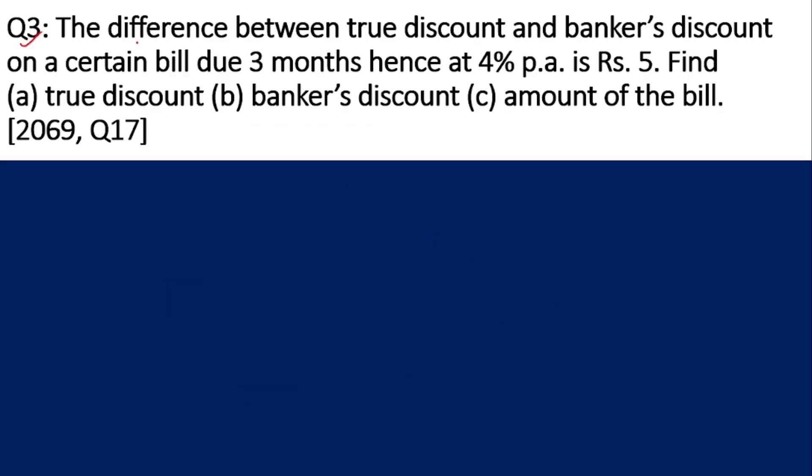Third question: The difference between true discount and banker's discount on a certain bill due 3 months hence at 4% per annum is rupees 5. The difference between true discount and banker's discount is given as rupees 5. This is also called banker's gain. We need to find: (a) true discount TD, (b) banker's discount, and (c) amount of the bill, which means the face value.